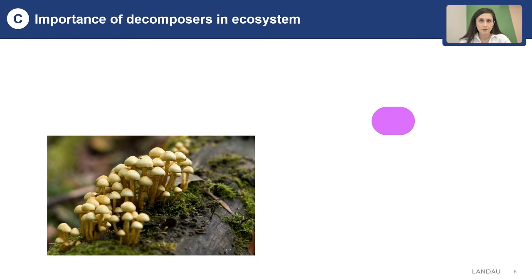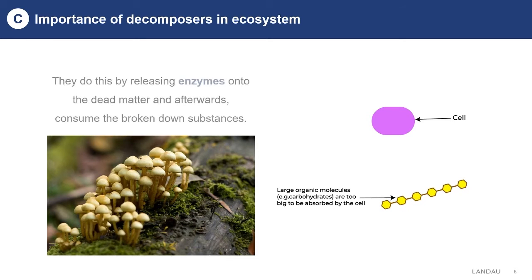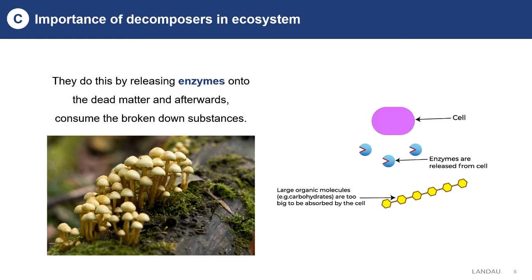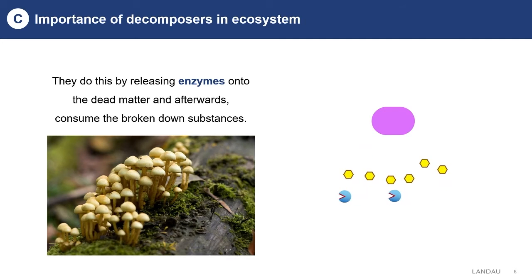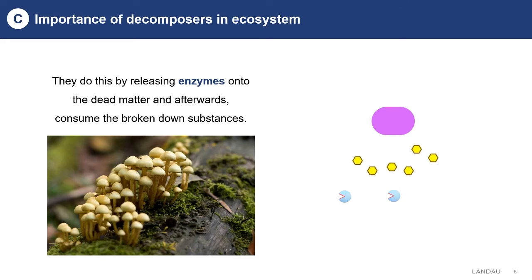Now let's see how these organisms actually carry out the decomposing process. They do that by making enzymes and releasing those enzymes onto dead matter, then breaking down substances which are now able to be absorbed. We can see in the animation a cell of fungi or bacteria acting as a decomposer. Large organic molecules that are too big to be absorbed are broken down by enzymes into smaller soluble molecules that can be absorbed by the fungi or bacteria.